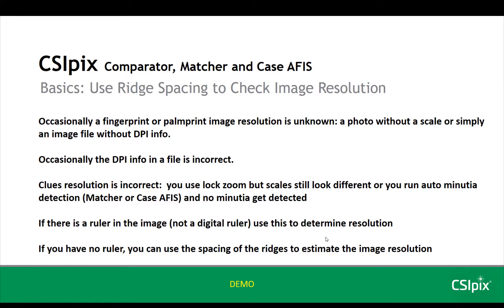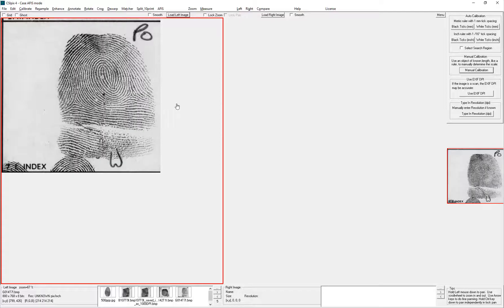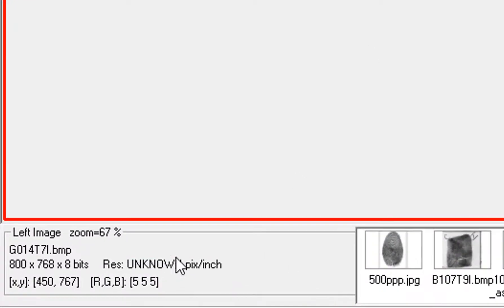Occasionally, a fingerprint or palm print image resolution is unknown. For example, you may have a photo without a scale or simply an image without DPI information in the file. This will be obvious because the resolution will be shown as unknown below the image. Here I've opened an image with an unknown resolution, and you can see here it says Res Unknown.